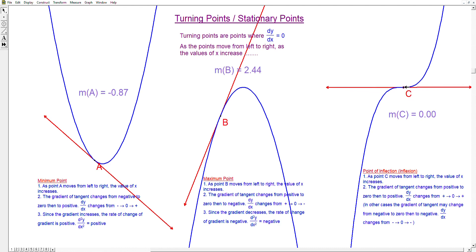At the point where dy/dx is zero, or the gradient is zero, this point is neither a minimum nor a maximum. It is called the point of inflection.